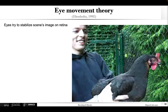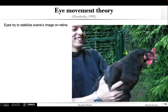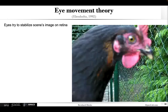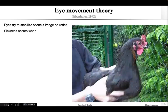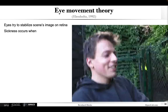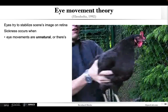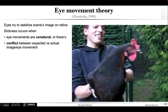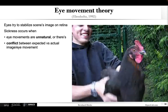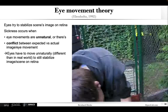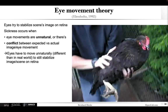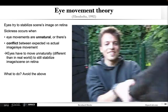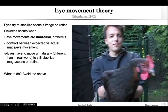Eye movement theory is another theory here, nicely illustrated with the common chicken, where the eye in general really tries to stabilize the scene on the retina. Cyber sickness or VR sickness can then occur when these eye movements needed to stabilize the image on the retina are really unnatural, or there's a conflict between the expected and actual eye movements or image movements. Basically, whenever the eyes have to move unnaturally — different than the real world — to still stabilize the image on the retina, that's a problem. So what to do: avoid the need for these unnatural eye movements or conflicts.